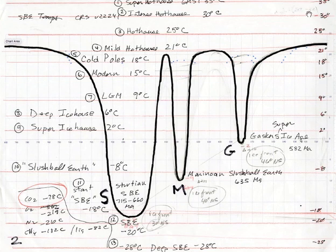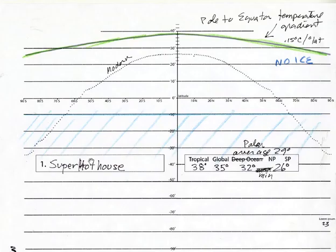The horizontal red lines represent various temperatures as the Earth has cooled into Snowball Earth. And what we'll be looking at are about a dozen waypoints from a super hothouse to the super ice house of Snowball Earth. The way we'll do it is by looking at the overall temperature of the Earth represented by this pole to equator latitudinal temperature gradient.